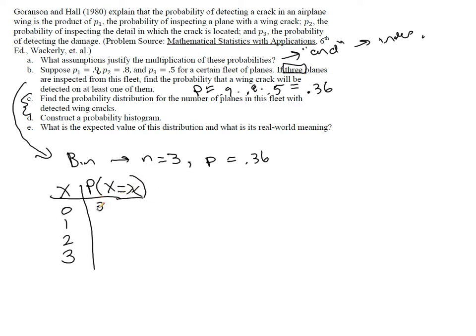Well, this is three trials, zero successes. Probability of success is 0.36. Zero of those. Then the other 64% of the time, we would expect basically three failures in this situation. This would be 3 choose 1, 0.36 to the first, 0.64 squared, and so on down the line.